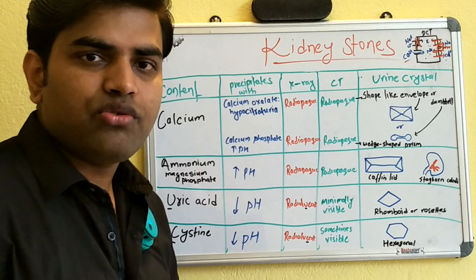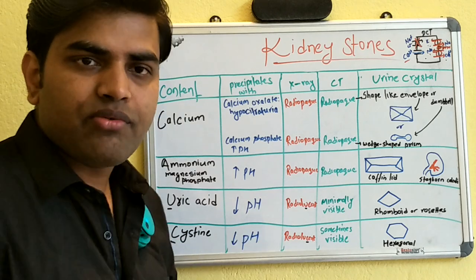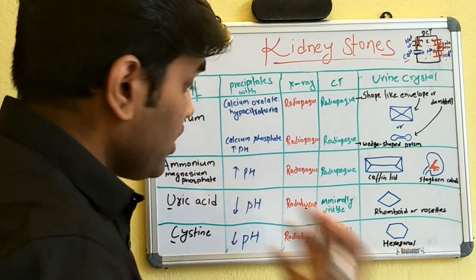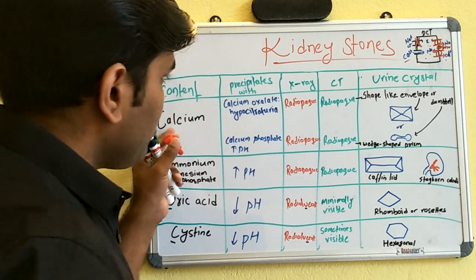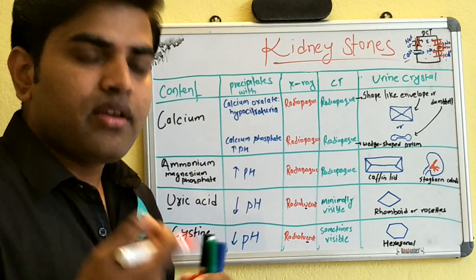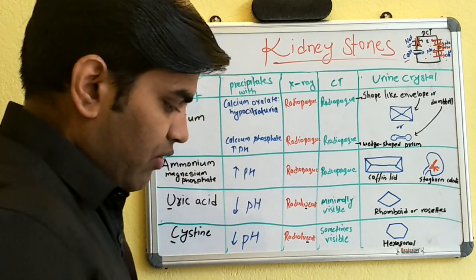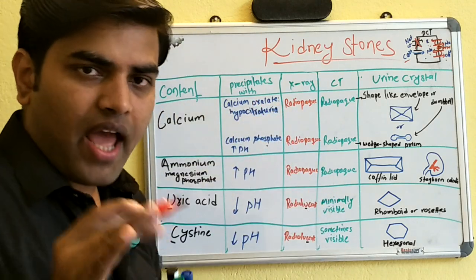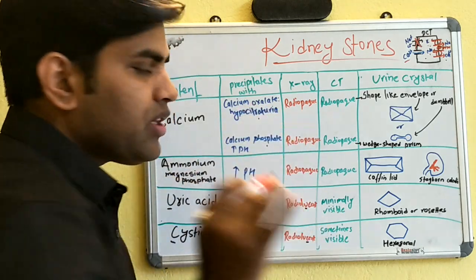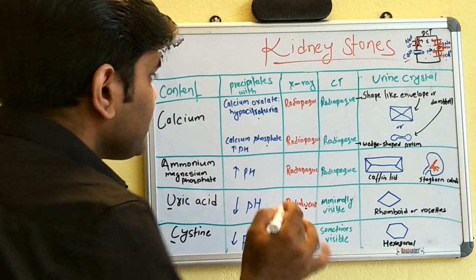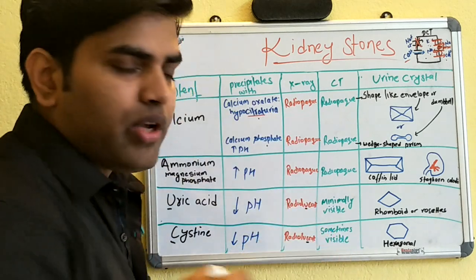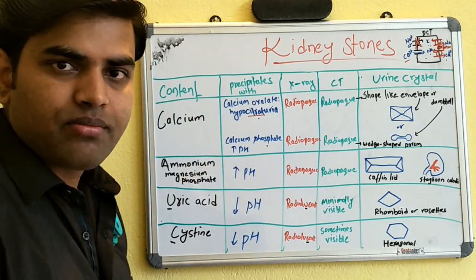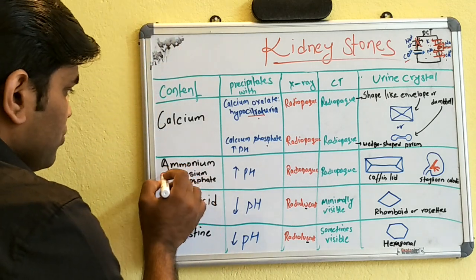With less calcium going into the urine, there is less precipitation and less formation of renal stones. Therefore, the primary treatment for calcium stones is thiazide diuretics plus a low sodium diet. Additionally, citrate supplementation can be added, as citrate chelates calcium and prevents calcium stone formation.